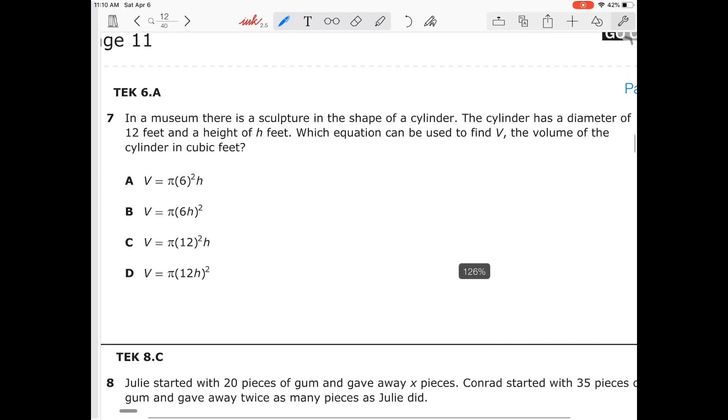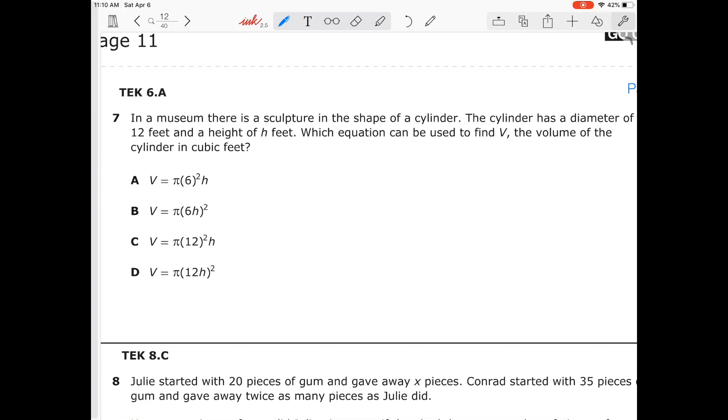Now, number seven is TEK 6.A. The sculpture is in the shape of a cylinder. The cylinder has a diameter of 12 feet. So D equals 12, and we have h, we don't know what h is. Which equation could be used to find v, the volume of the cylinder in cubic feet? So volume of cylinder is equal to bh, which is pi r squared h. So now I need to find my diameter. 12 divided by 2 will give me 6. So volume is equal to pi 6 squared times h. Let's see which one matches our answer choice. Our answer choice happens to be right there at A. So it's really that simple, quick and easy.